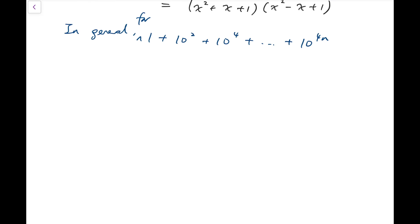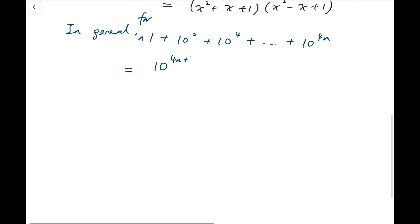And now I'm going to try to factorize this expression. So in fact, using the finite geometric series, we know that this is equal to 10 to the power of 4n plus 2 minus 1, all divided by 10 squared minus 1.